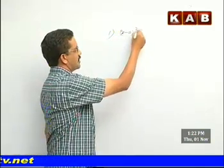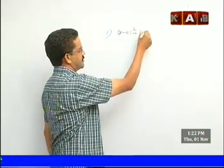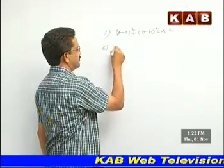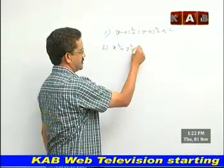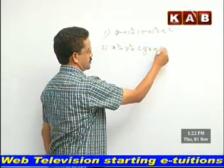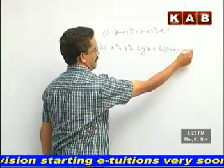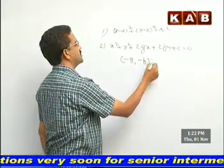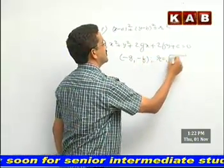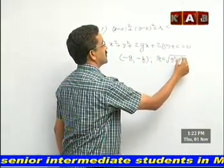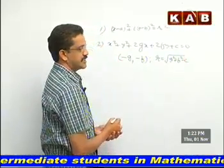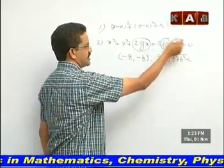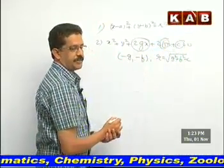A circle with center (a,b) and radius r — its equation is this. The general equation of the circle is x² + y² + 2gx + 2fy + c. Once you have the general equation, its center is (−g, −f) and radius is √(g² + f² − c). The circle has three independent constants g, f, c — very important for your exam.